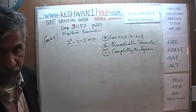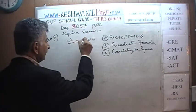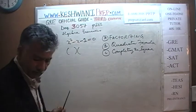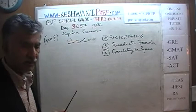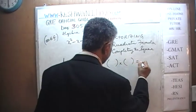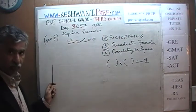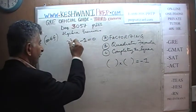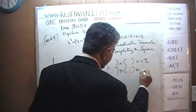Let's try factorizing. We are looking for two numbers such that their product is negative one and their sum is also negative one.